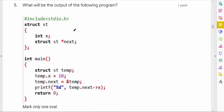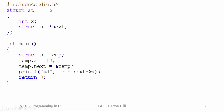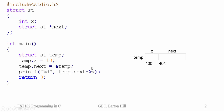The fifth question asks for the output of a program. We have structure 'st' with members x and a pointer 'next' capable of pointing to a struct st variable. In main, a variable 'temp' of type st is declared — assume it is allocated at address 400. Memory for x is at 400 and memory for next is at 404. When temp.x = 10 is executed, the value of member x becomes 10.